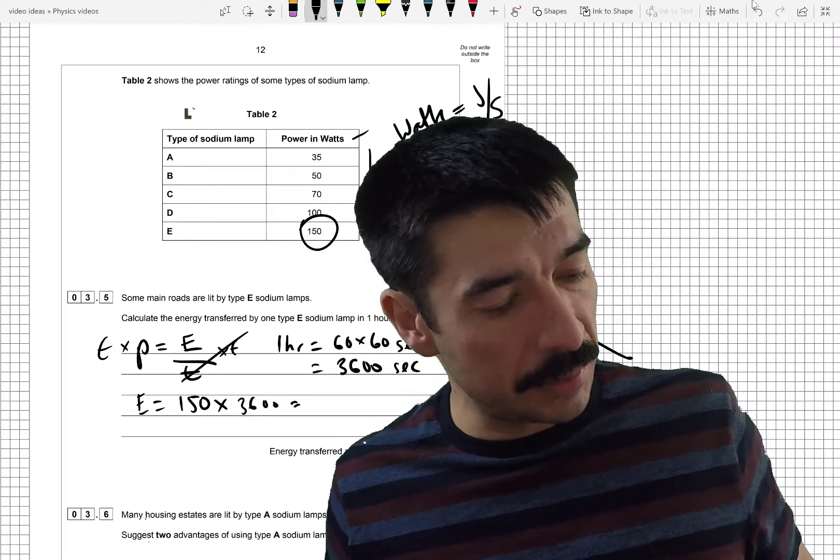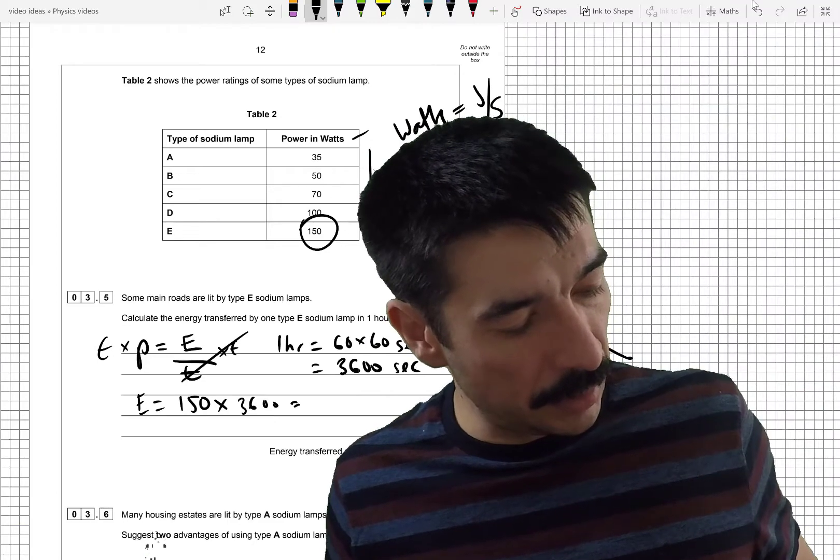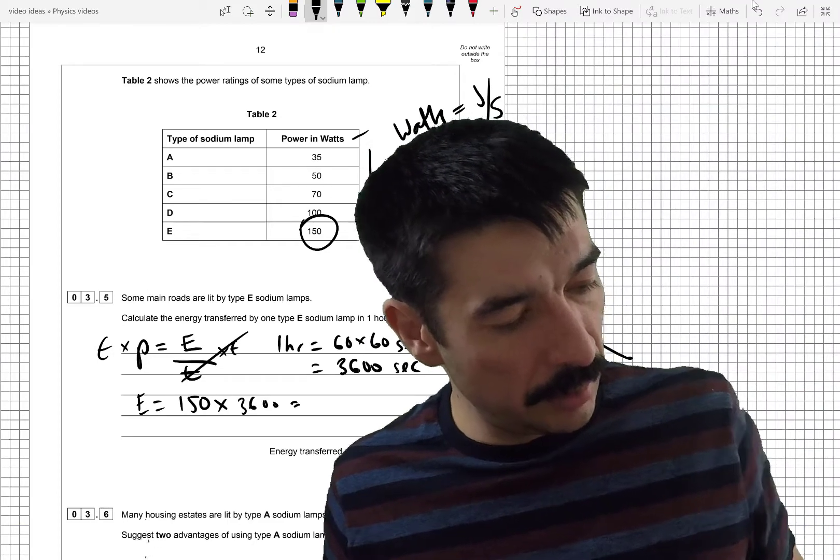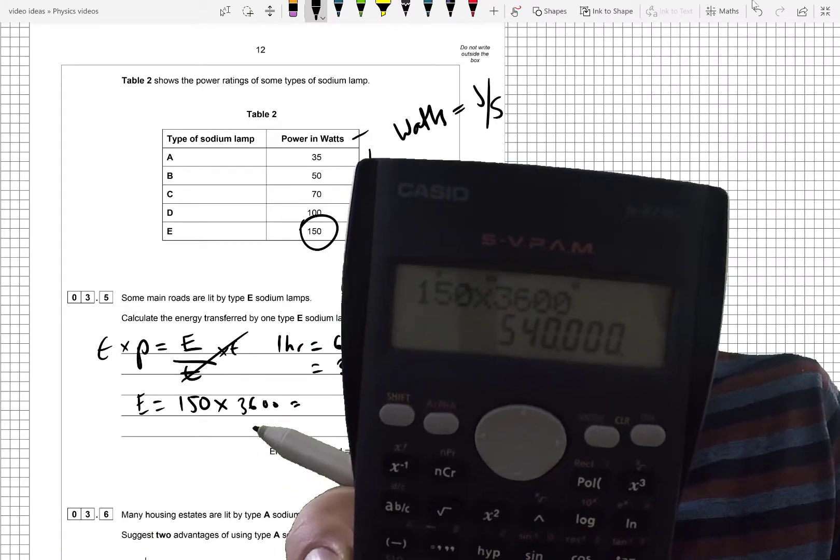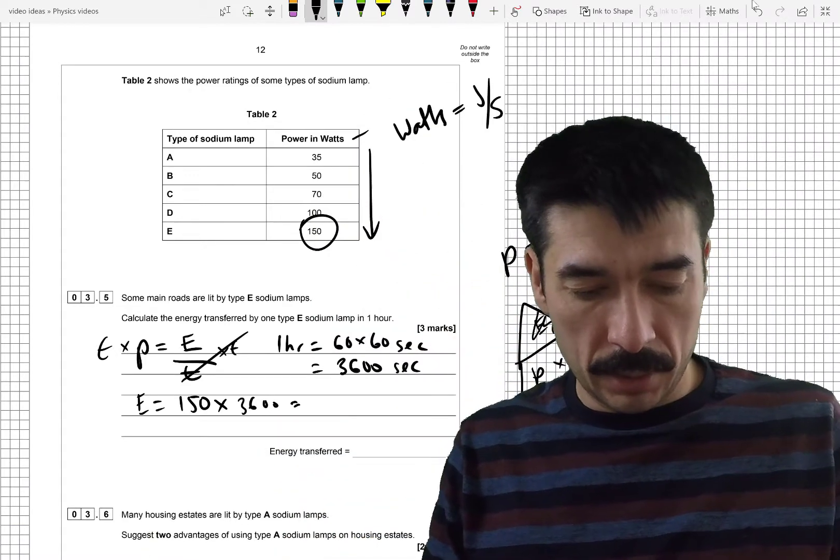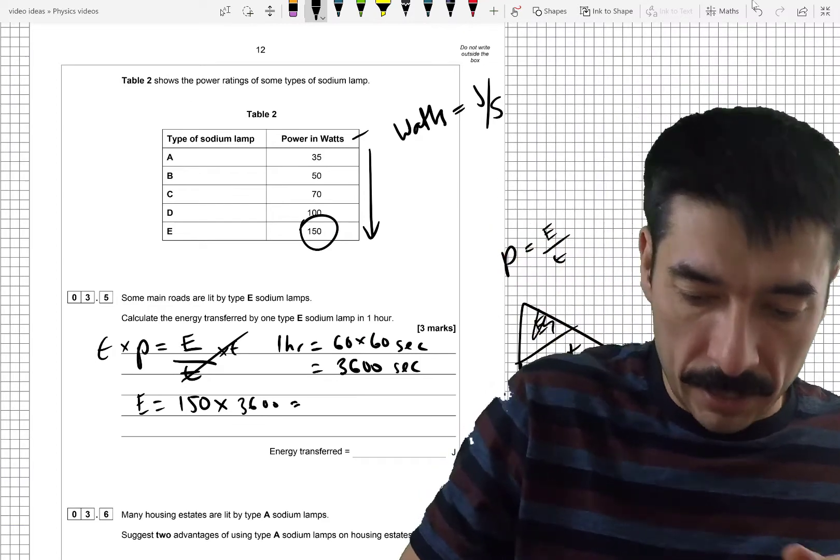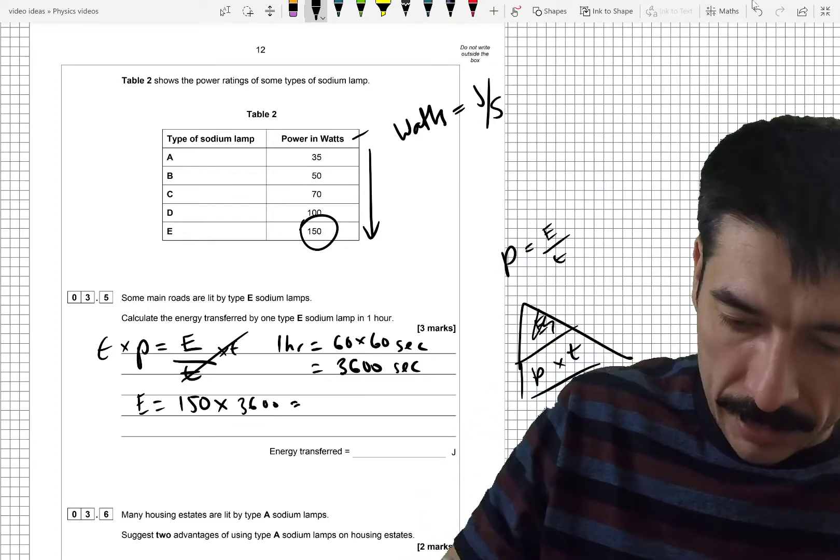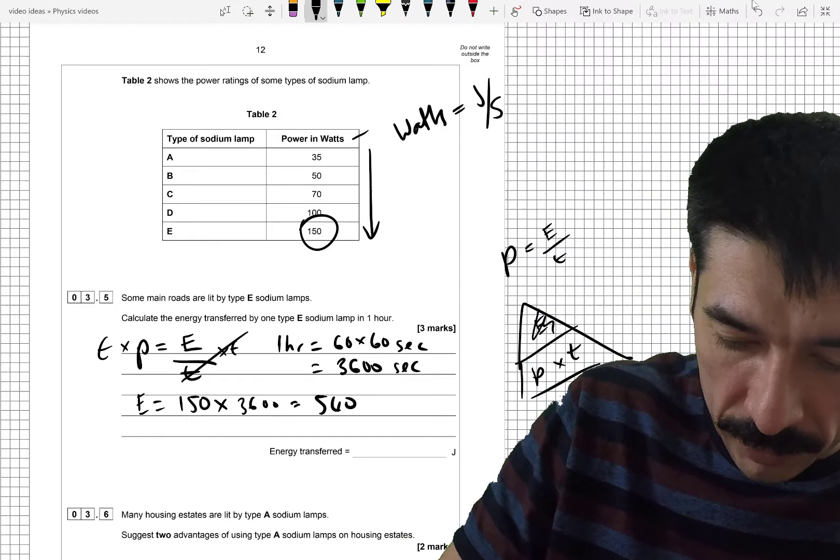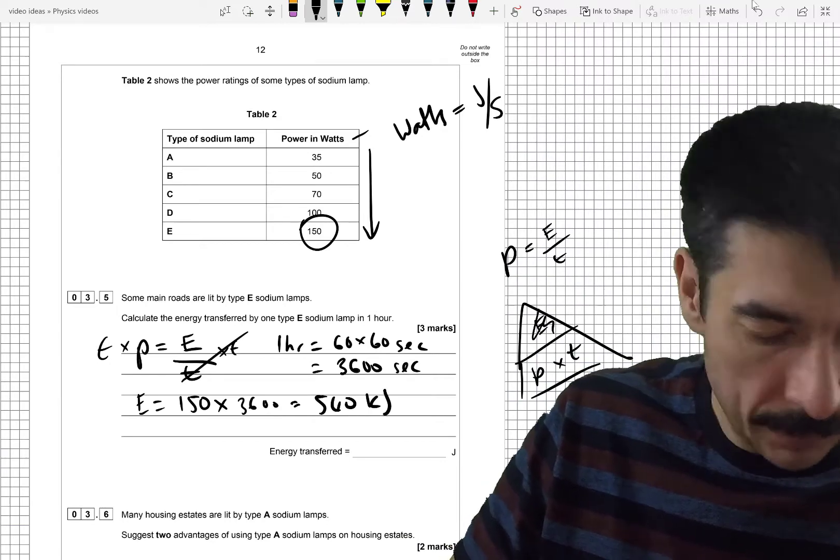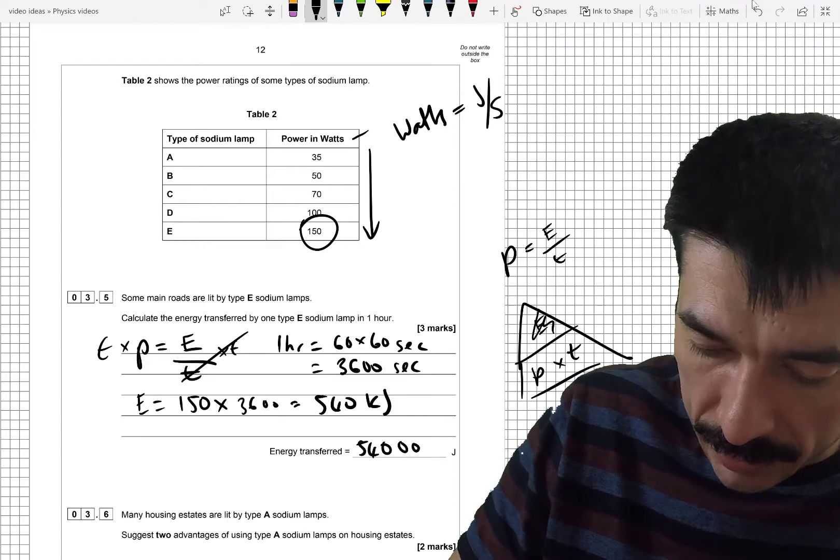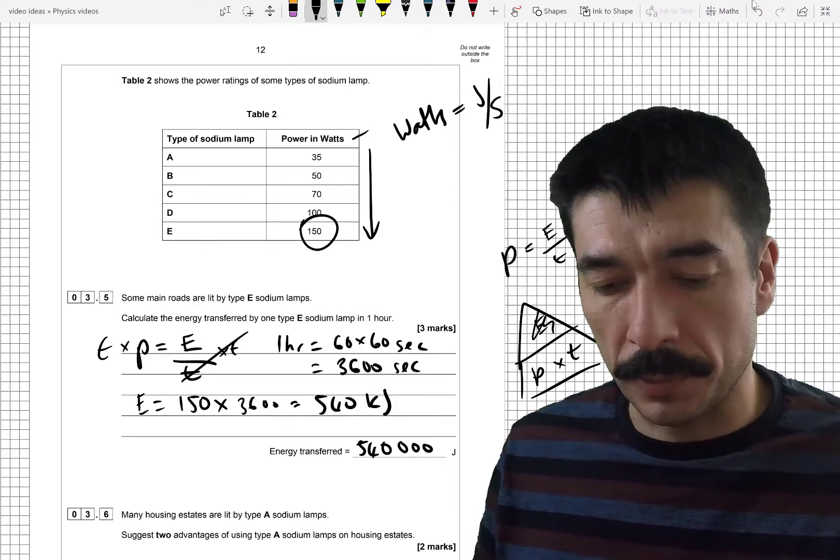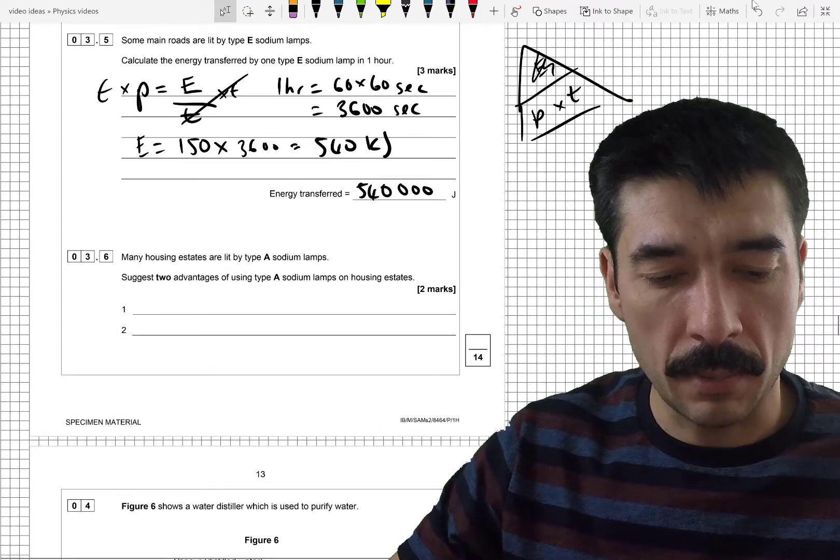So, 150 times 3600, 150 times 3600, gives me this very large value. So, I could write it out as, well, I better actually leave it as it is. It's actually 540 kilojoules. But, they've given me the units, and it's in joules, so I'll stick with joules.